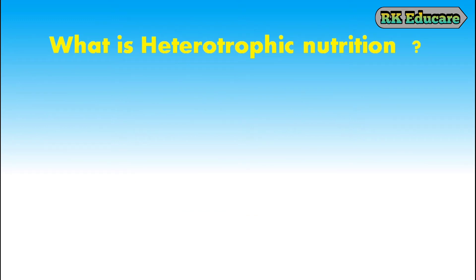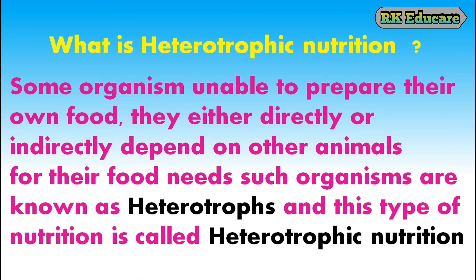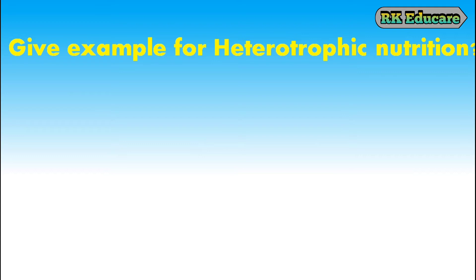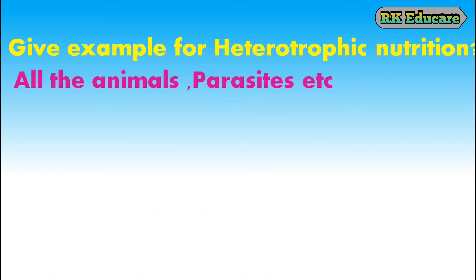What is heterotrophic nutrition? Some organisms are unable to prepare their own food materials. They either directly or indirectly depend on other animals or plants for their food needs. Such organisms are known as heterotrophs and this type of nutrition is called heterotrophic nutrition. All the animals, parasites, etc. are examples of heterotrophic nutrition.